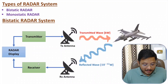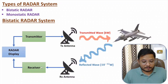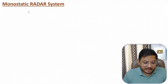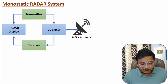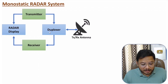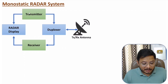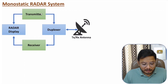Now I'll explain the monostatic radar system. In the block diagram of monostatic radar system, we have only one antenna. Here we have an additional component — the duplexer. The transmitter section has a transmitter that provides a high power signal to the duplexer.